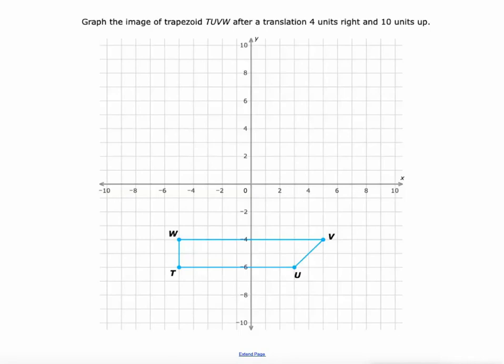This time we're going to go 4 units right and 10 units up. Okay, so let's focus on right first. So 4 units right, and we're going to move every point 1, 2, 3, 4 units to the right.